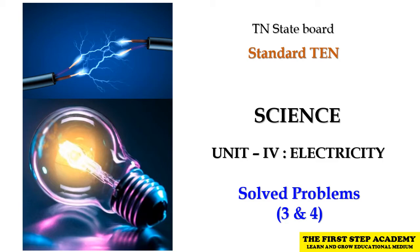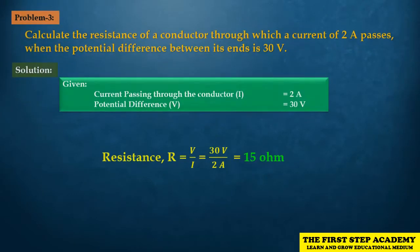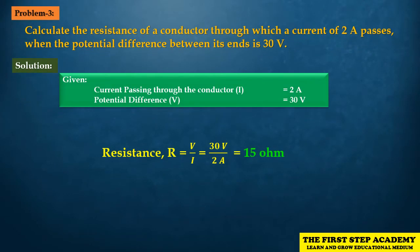Problem 3: Calculate the resistance of a conductor through which a current of 2A passes, when the potential difference between its ends is 30V. So we have a conductor with a potential difference of 30V across its ends and a current of 2A passing through it. We need to find the resistance.